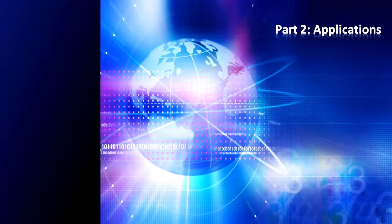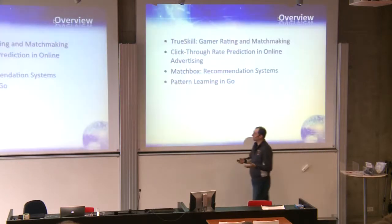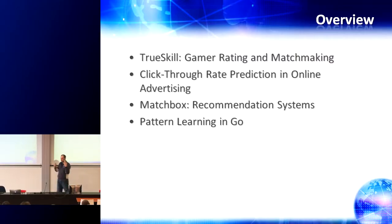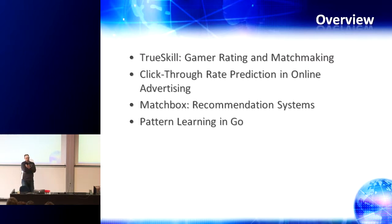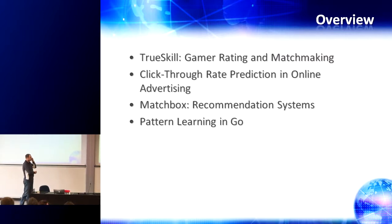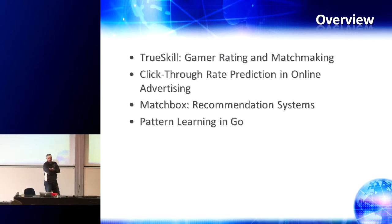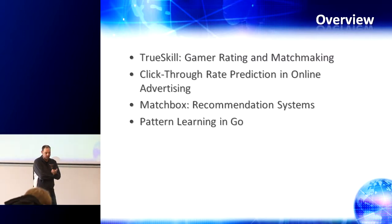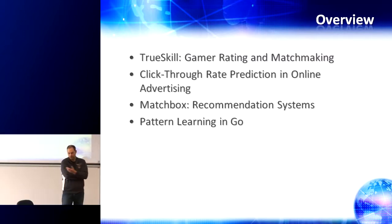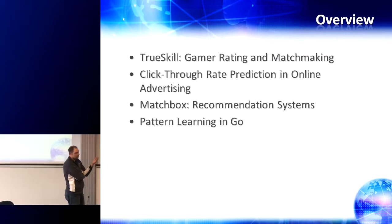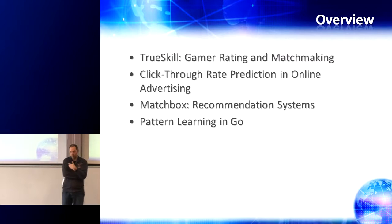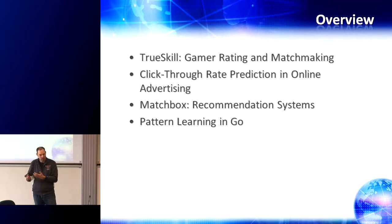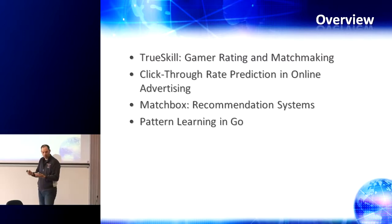As I said yesterday, this is a lot more about the applications of graphical models. The four applications we're going to cover are: a ranking system for Xbox Live called TrueSkill, an application in click-through rate prediction, prediction of user actions on ads or search results—so in particular online advertising—an application in recommendation systems, and how we can use graphical models to help a machine play the Chinese board game Go really well.